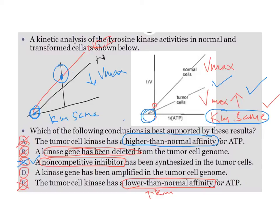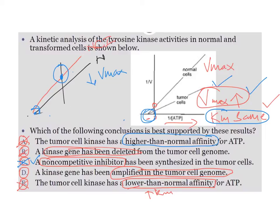Option D says a kinase gene has been amplified in the tumor cell genome. When a gene is amplified, more enzyme is synthesized at higher concentration. As enzyme concentration increases along with substrate concentration, the maximum velocity of the reaction increases — Vmax increases — while Km remains the same. Looking at all the options, option D makes sense and is the correct answer.